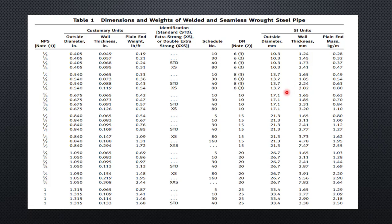For most Indians, metric standards are more convenient as we are used to them. From this standard's Table 1, you will get the size of the pipe, the OD, the wall thickness, and the weight per foot. In metric units, the same values are given in mm and weight in kg per meter. You will also get details of different wall thicknesses available for a particular pipe — for example, schedule numbers 10, 30, 40, and 80. Each schedule number has a different thickness, and you also have Standard and Extra Strong (XS and XXS) designations.